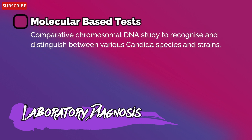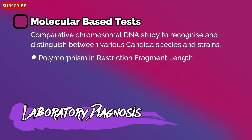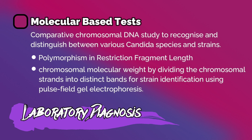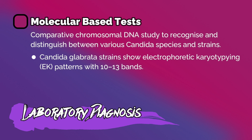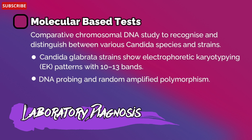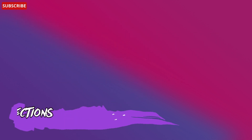Molecular-based tests include comparative chromosomal DNA study to recognize and distinguish between various Candida species and strains, restriction fragment length polymorphism, and pulsed-field gel electrophoresis for strain identification. Candida glabrata strains show electrophoretic karyotyping patterns with 10 to 13 bands, along with DNA probing and random amplified polymorphism.